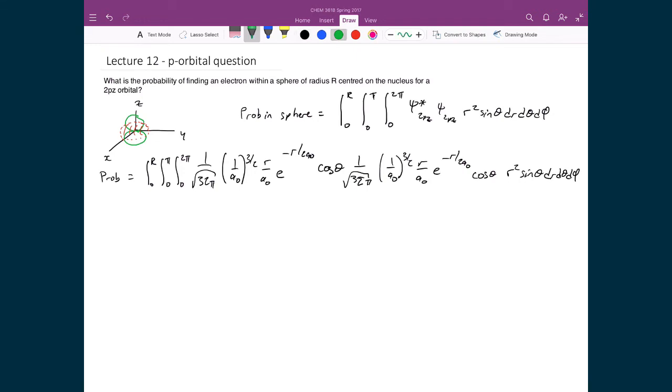Now this term that I just substituted in for ψ of 2p_z, which is 1 over √(32π) times (1/a₀)^(3/2) times r/a₀ times e^(-r/2a₀) times cosine theta, is different than the one I was talking about in the previous slide.